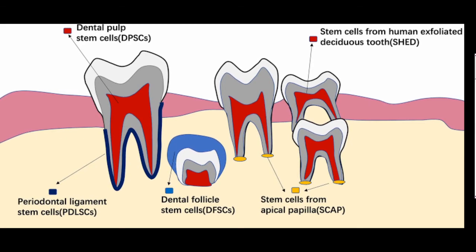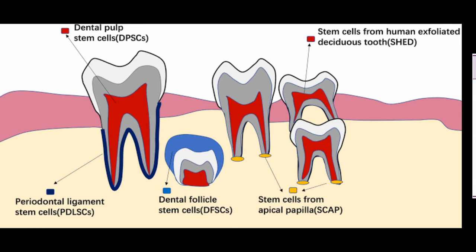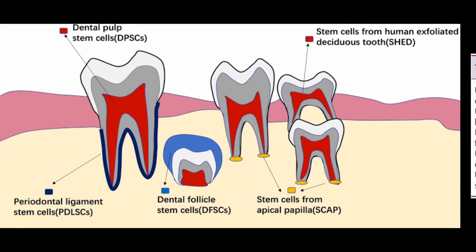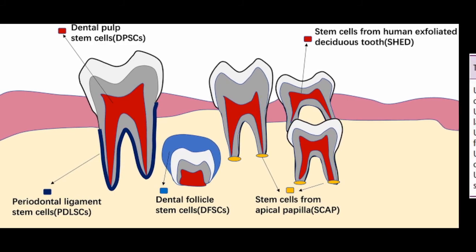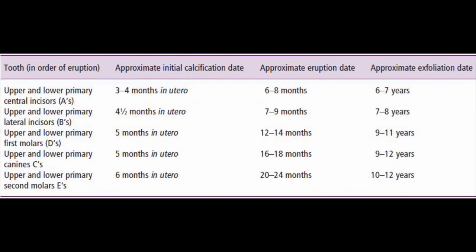Research has shown that the interaction between the reduced enamel epithelium and the dental follicle causes tooth eruption. The coronal half of the dental follicle makes colony-stimulating factor 1 (CSF-1), which promotes osteoclast differentiation and causes bone resorption, leading to tooth eruption. The apical half of the dental follicle secretes bone morphogenetic proteins (BMPs), which promote bone formation. So bone formation at the base and bone resorption at the upper level created a pathway for the tooth to erupt, with osteoclasts delineating an eruptive pathway.